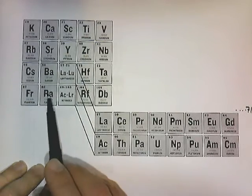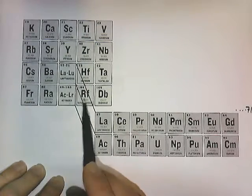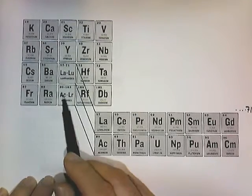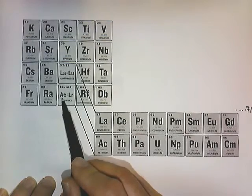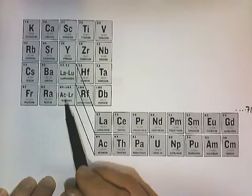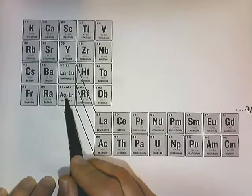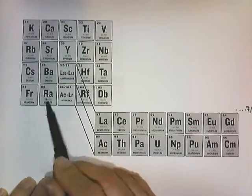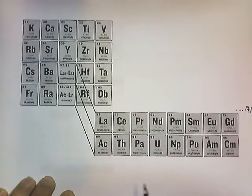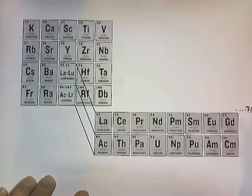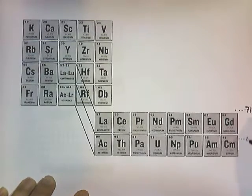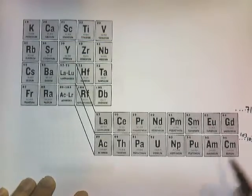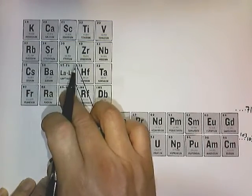Likewise, if you look for radium and rutherfordium on the periodic chart, in between you've got a box that says AC-LR. This indicates that elements 89 through 103 are crammed into this box. These elements are called the actinide series.